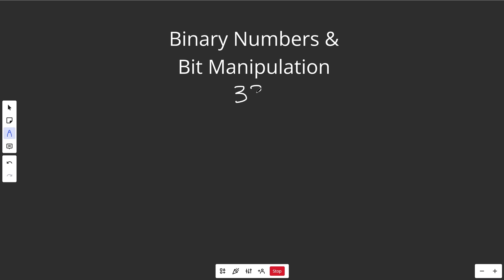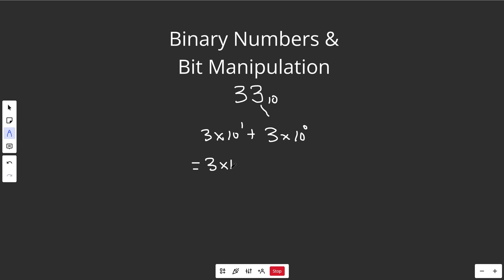Let's say we had a number like 33. What that really is, is 33 in base 10. We don't generally write this because we're used to base 10, but you could really use any base you want. You're basically taking this number — 3 times 10 to the 0, because 10 to the 0 is just 1, so that's giving you 3. And then you're adding to that 3 times 10 to the 1. So if you were to math this out, you'd get 3 times 10 plus 3 times 1, which is equal to 33.